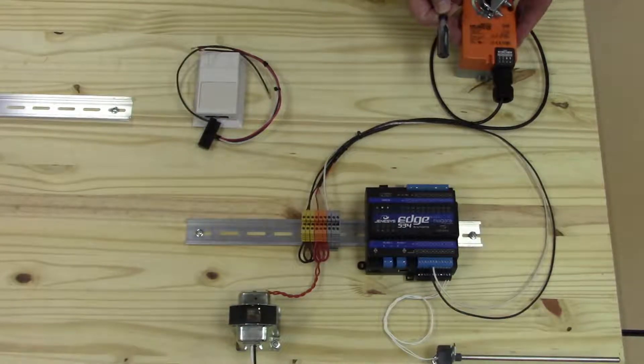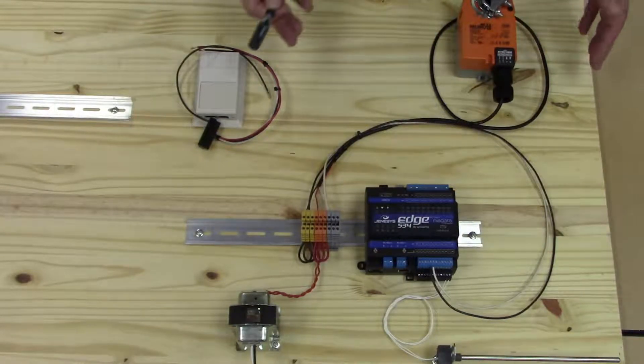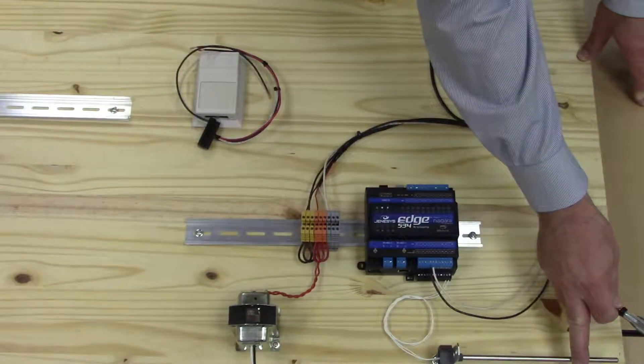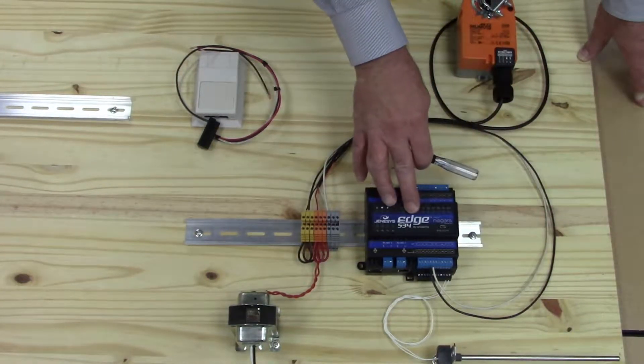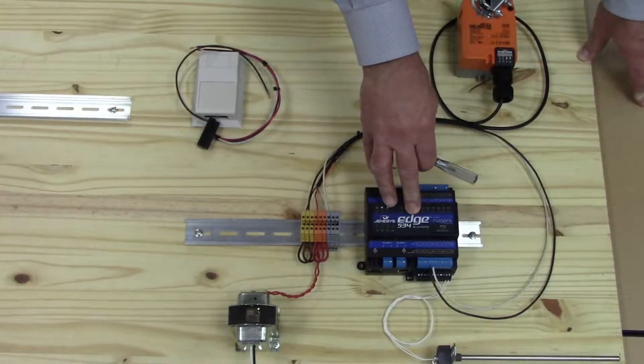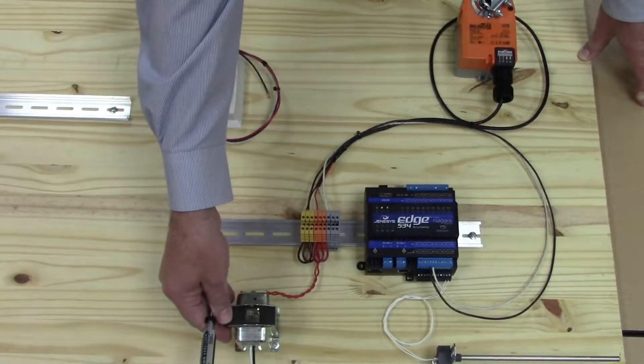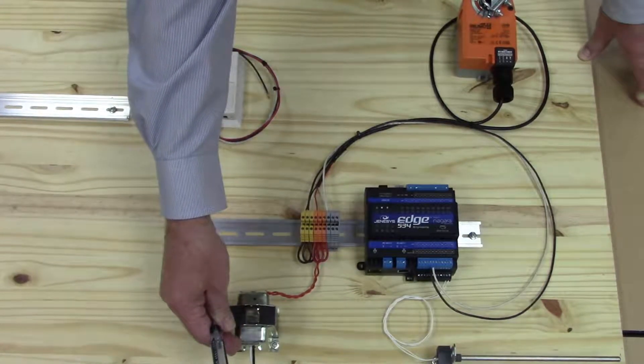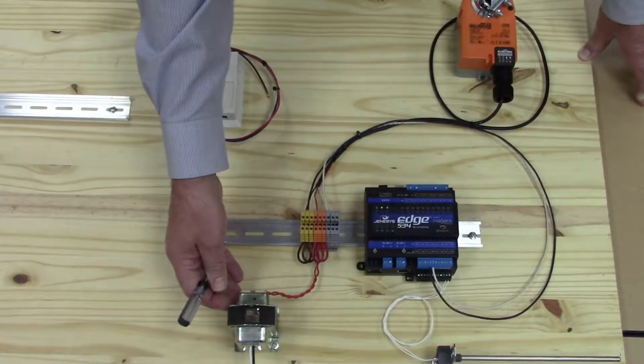Here we have a Blimo actuator, we have a terminal strip, we have a Type 3 thermistor, of course we have the Genesis Edge 534, and then also here I want to focus on a general purpose power supply. This is 120 volts to 24 volts AC.